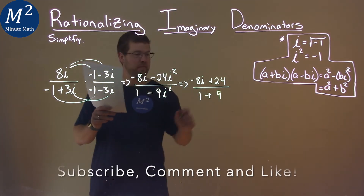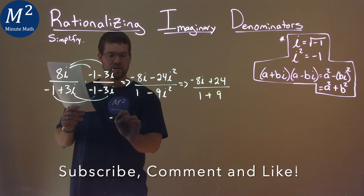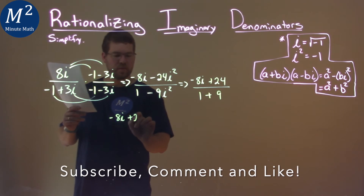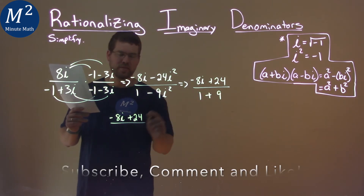Let's simplify that out. So we have negative 8i plus 24, over 1 plus 9, which is 10.